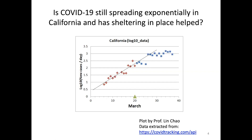We still have tons of new COVID-19 patients arising each and every day, but that number isn't growing exponentially anymore — we're maintaining the same rate of increase per day. It appears that sheltering in place is having an effect in California.